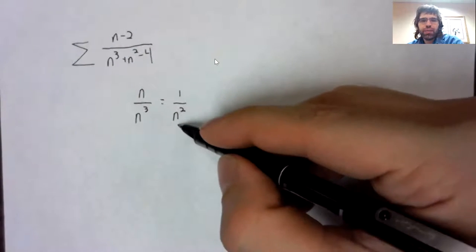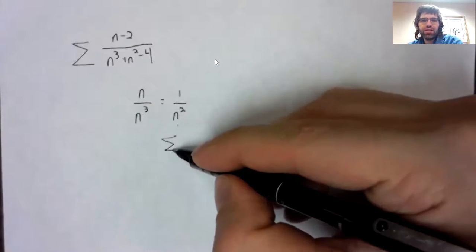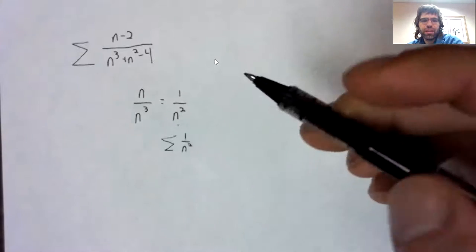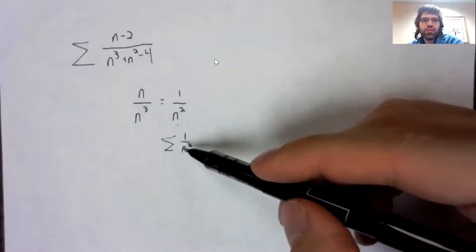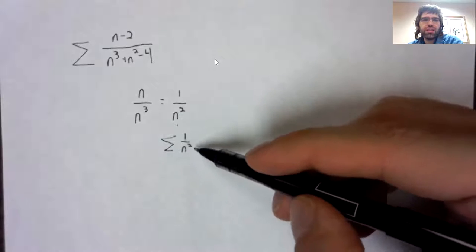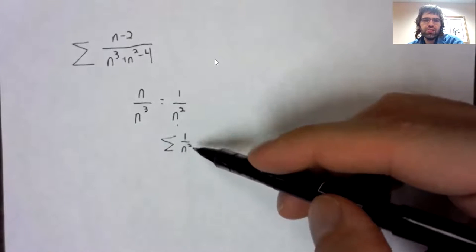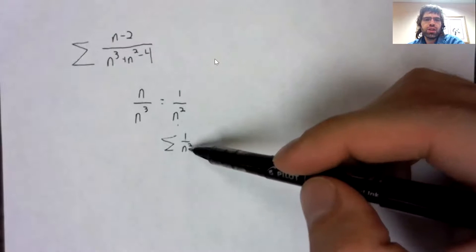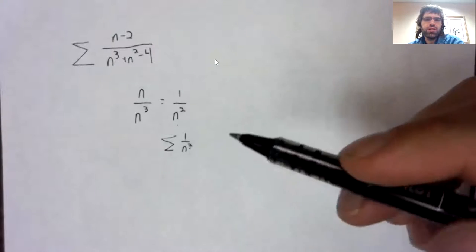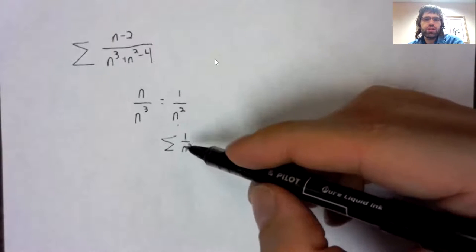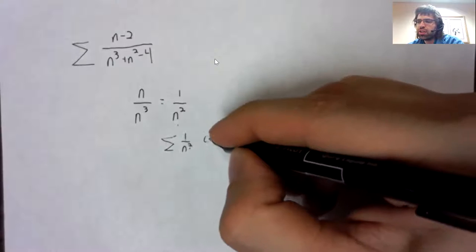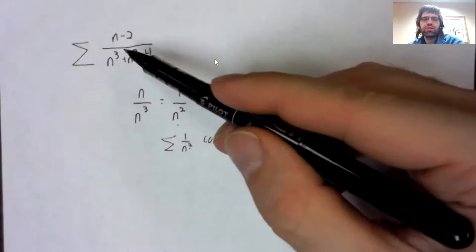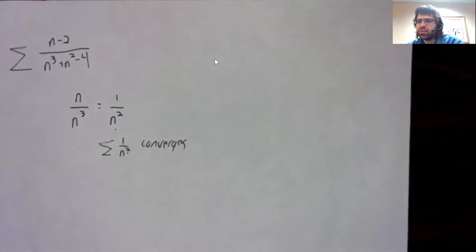And if we add summation in front of that, this is a convergent P series. So if this series really does look like this series, and this series converges, then this series converges.